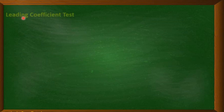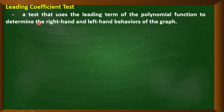Before we go further, let us first understand the concept of the leading coefficient test. The leading coefficient test is a test that uses the leading term of the polynomial function to determine the right-hand and left-hand behaviors of the graph. With the leading coefficient test, we can already visualize the form of our graph.